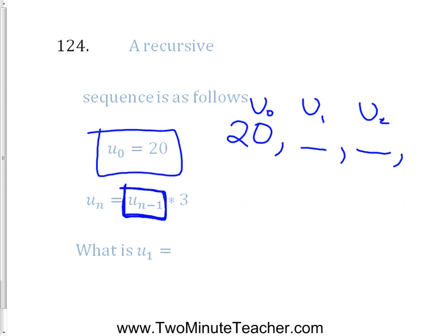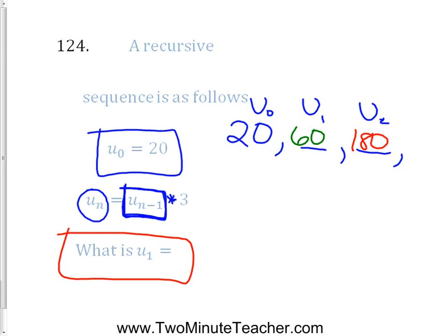If I take the number right before it and multiply by 3, I get U sub n. So the sequence goes: 20, times 3 is 60, times 3 is 180, and so on. U sub 1 is the term right after U sub 0, which is 60. The answer is 60.